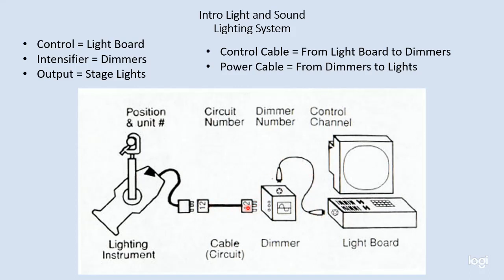As you'll remember from our cable lectures, power cable is big and signal cable is small, and the two can't be mixed or matched. So that's our simplest system — our light board controller with a single dimmer that outputs to a single light and makes our light turn on and off.